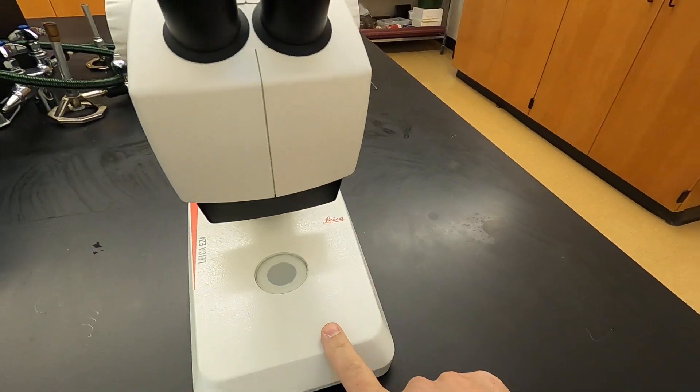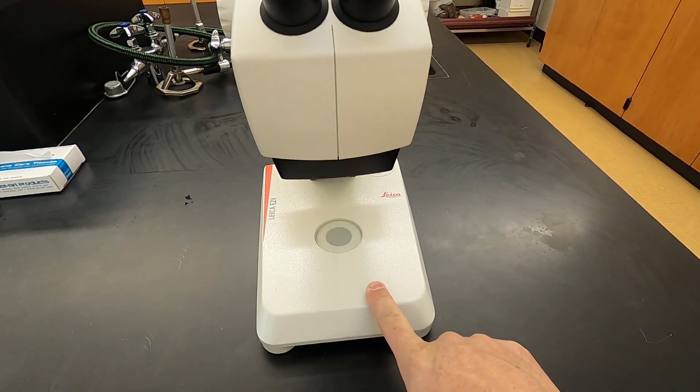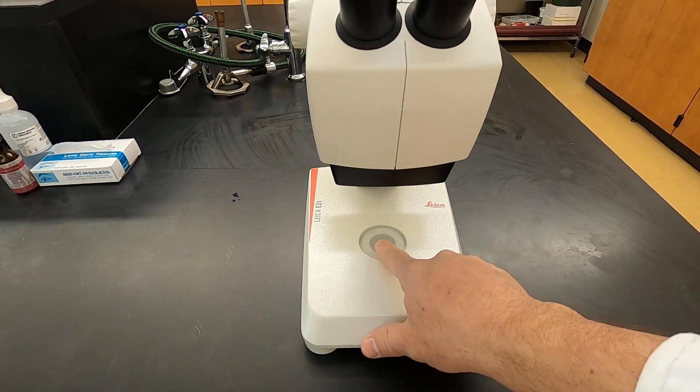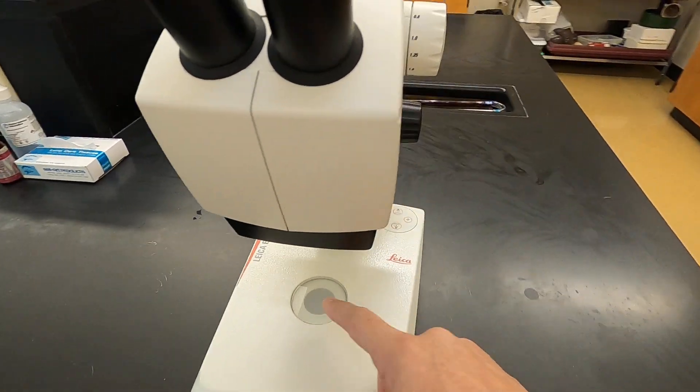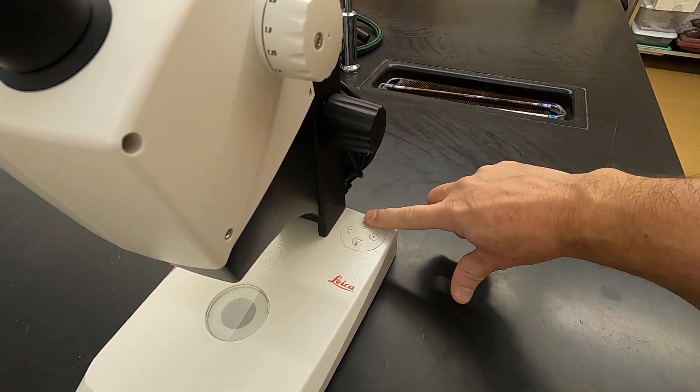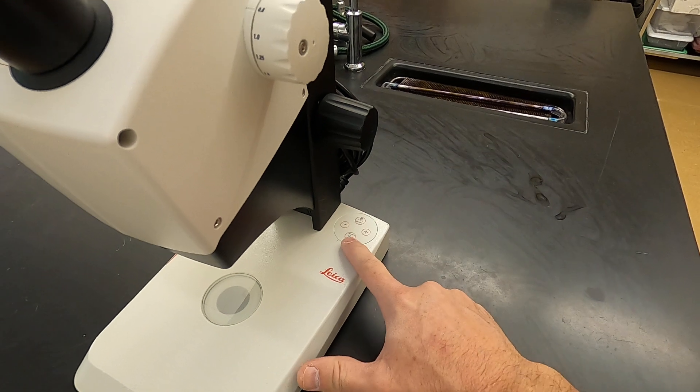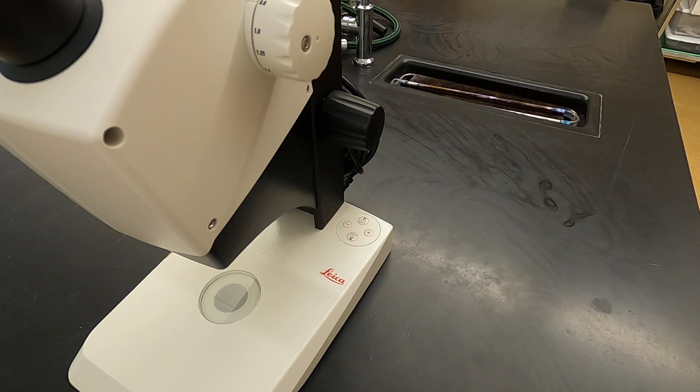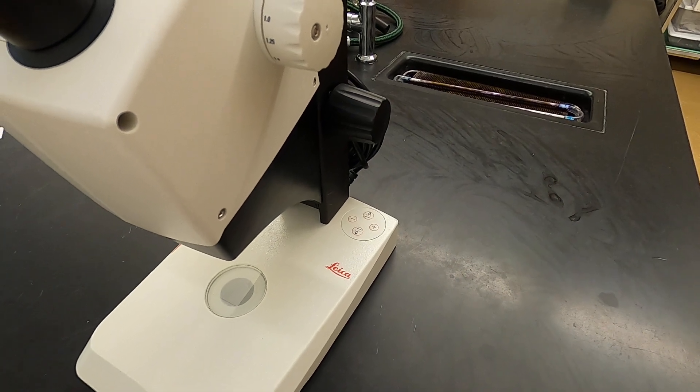Here you have the stage, and set inside the stage is the light source. Once it's plugged in, the controls are over on this side. We can have the light shining from above or below, and we can increase or decrease the intensity with either of these buttons.